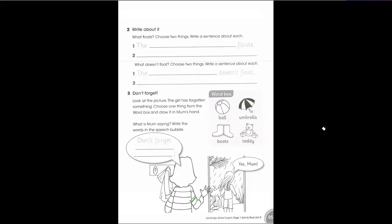Write about it. Question number two: write about it. What floats? Choose two things, write a sentence about each. The dash floats. What floats? The paper floats. Write paper. The paper floats.